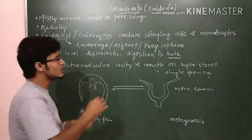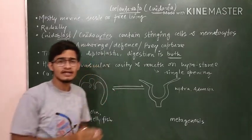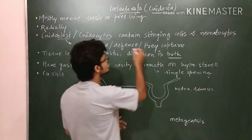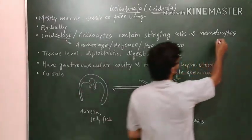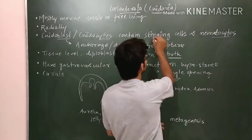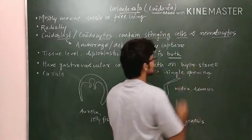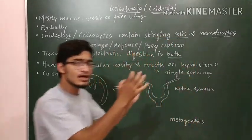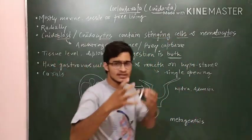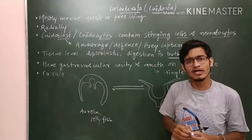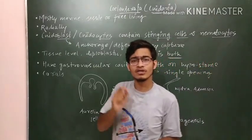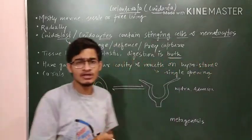Nidoblasts and nidocytes are the peculiar features of Coelenterata. Nidoblasts and nidocytes contain nematocysts - also called nematocytes or stinging cells. These are some bulb-like structures, as you can see in the diagram. One function of nematocysts is anchorage.